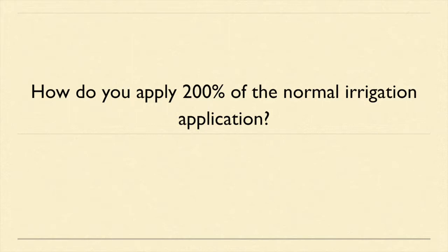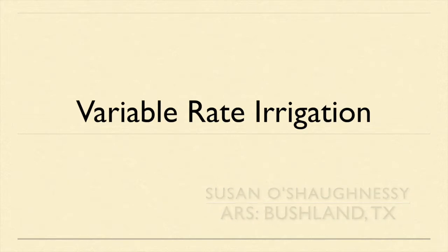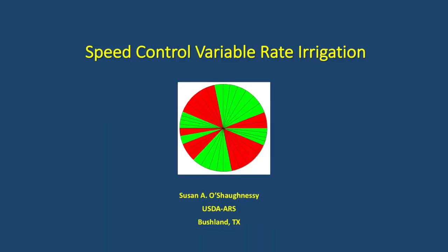Our second presenter today is Dr. Susan O'Shaughnessy from the Agricultural Research Service. Dr. O'Shaughnessy has been with the ARS since 2006. She is currently a research agricultural engineer at ARS's Soil and Water Management Research Unit in Bushland, Texas. Susan, the floor is yours. Thank you, Peter. At Bushland, we've been working with VRI systems since 2010. We have two center pivots outfitted with VRI hardware. Although we work with both zone control and speed control, I'm going to focus my presentation on speed control variable rate irrigation.